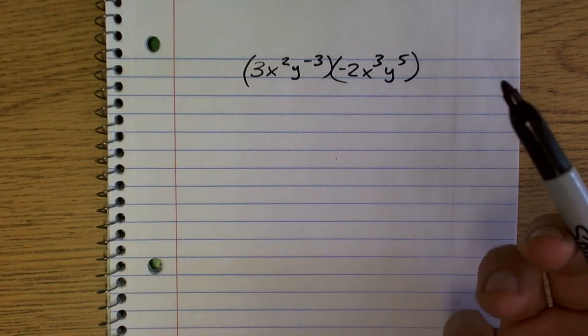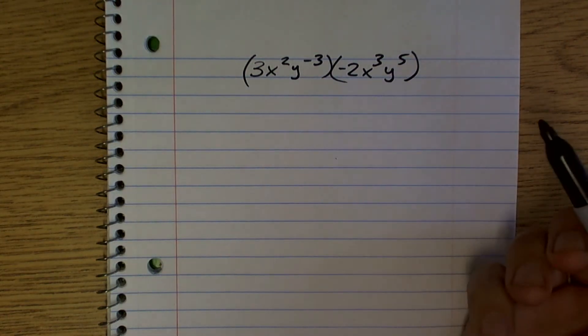So if we're doing this, what they want us to do is they want us to simplify. So we've got to use the rules of exponents.